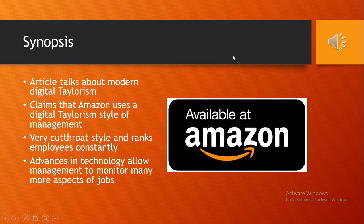This article talks about a so-called modern digital Taylorism. A big part of the article discusses how Amazon uses digital Taylorism in their style of management. It's a very cutthroat style where Amazon employees are ranked constantly and there's always feedback coming from management. With new technology — which is where the digital aspect comes in — management can monitor aspects of the job that were previously unmanageable.